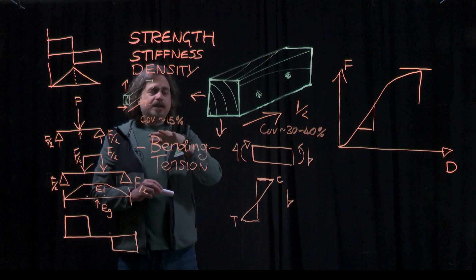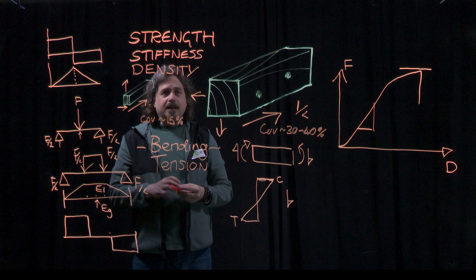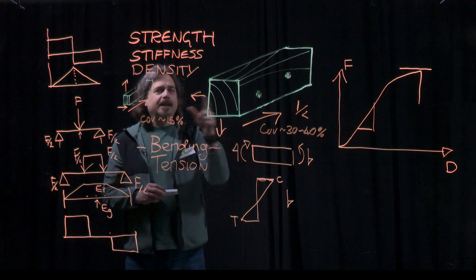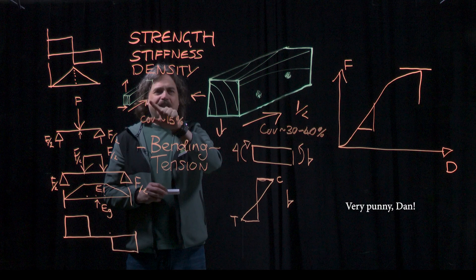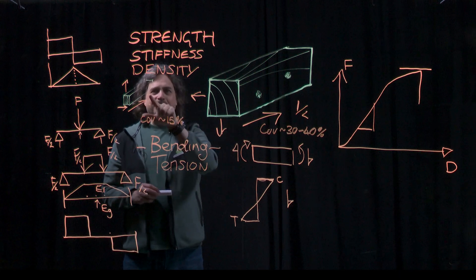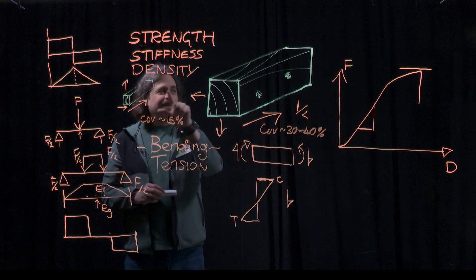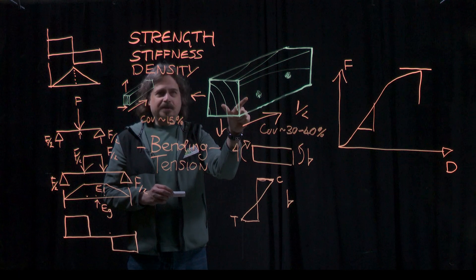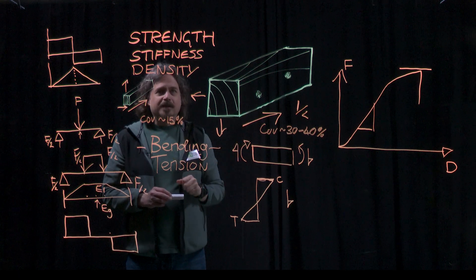So if you're looking at data, you're looking at strength values in a textbook or a research report, you need to be clear which test they're referring to. Are they referring to small clear testing? Or are they referring to full structural size testing? Because there's a big difference in the strength values.